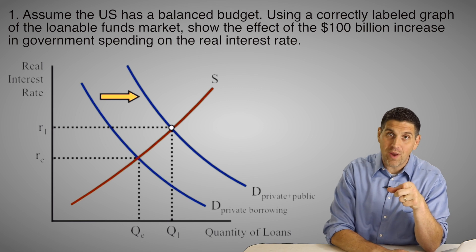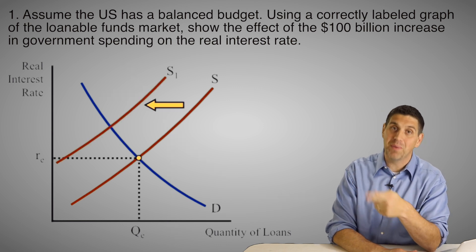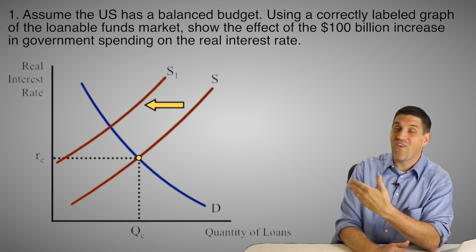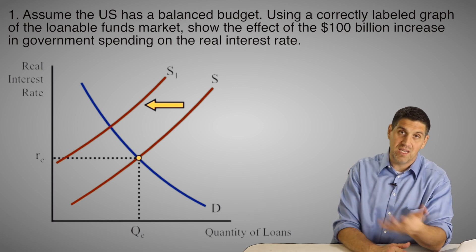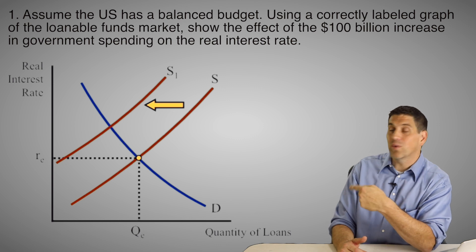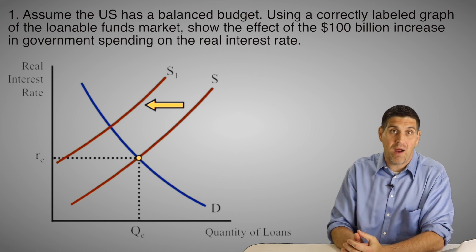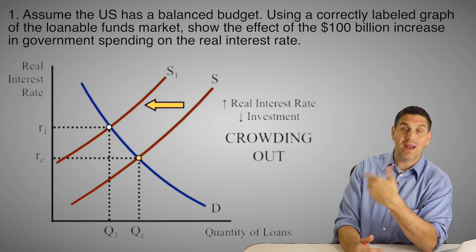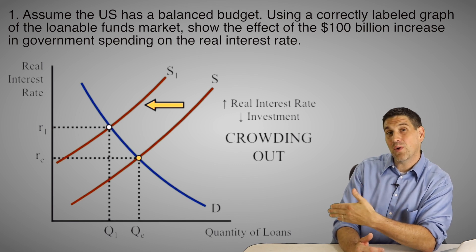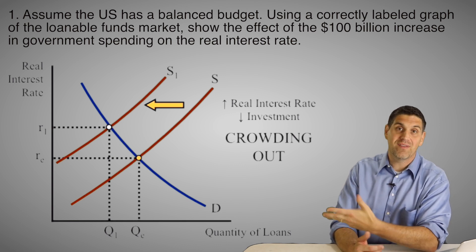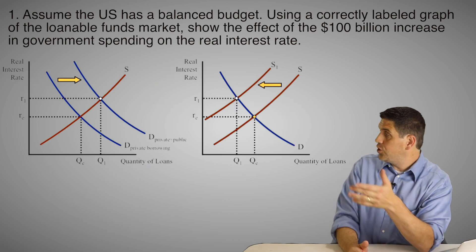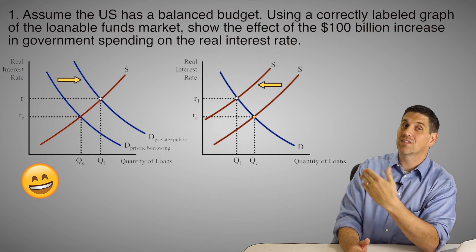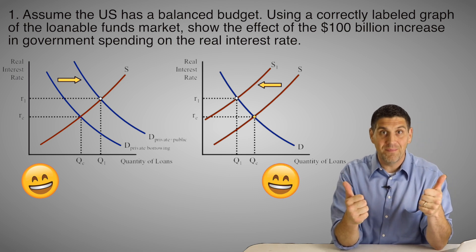What's also correct is a decrease in supply. The idea is if the government is doing all the borrowing, that's less funds available for businesses and individuals. So the supply of loanable funds would decrease because the government's doing all the borrowing. This makes it easier to see the idea of crowding out — you can actually see a decrease in the quantity of loans in the private sector. So for question number one, if you showed an increase in demand, congratulations, you're right. But if you showed a decrease in supply, you're also right.